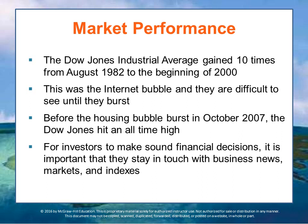The Dow Jones Industrial Average gained ten times from August 1982 to the beginning of 2000 — this was the internet bubble. Bubbles are difficult to see until they burst. Before the housing bubble burst, in October 2007 the Dow Jones hit an all-time high. For investors to make sound decisions, it's important that they stay in touch with the news and market indexes to understand what's going on. Securities markets in general measure how business investment and profits are doing within the overall economy, giving a sense of the overall position of our economic system — not perfectly, but meaningfully.